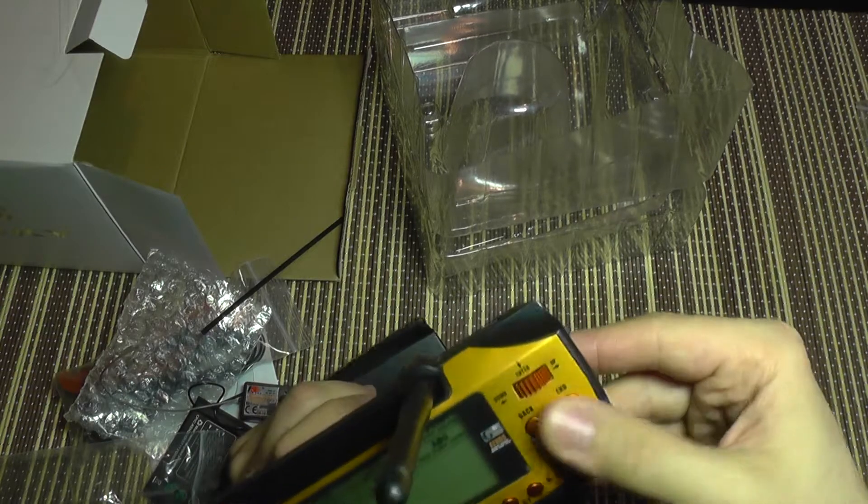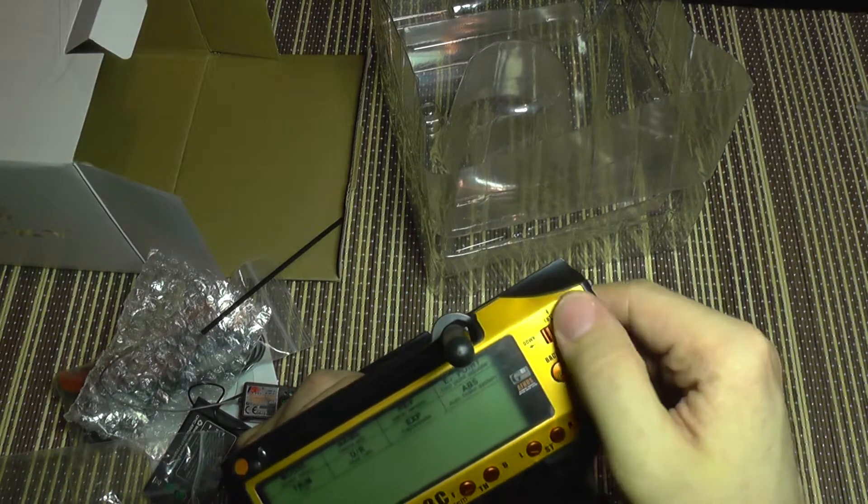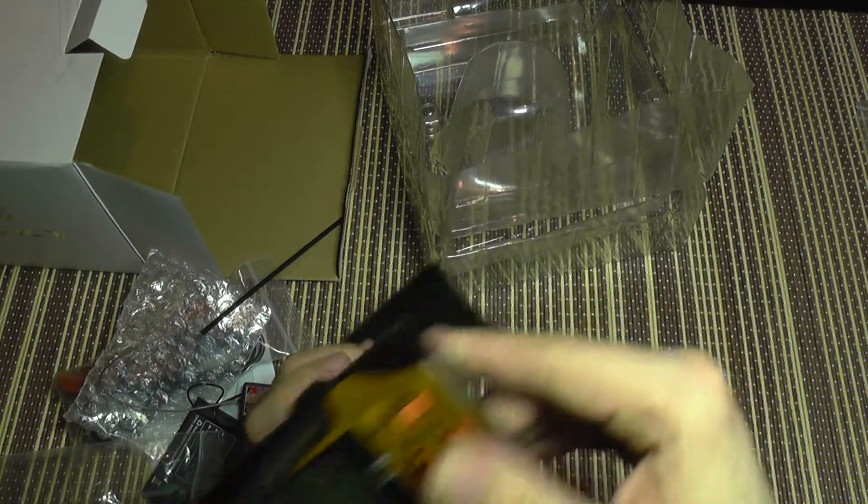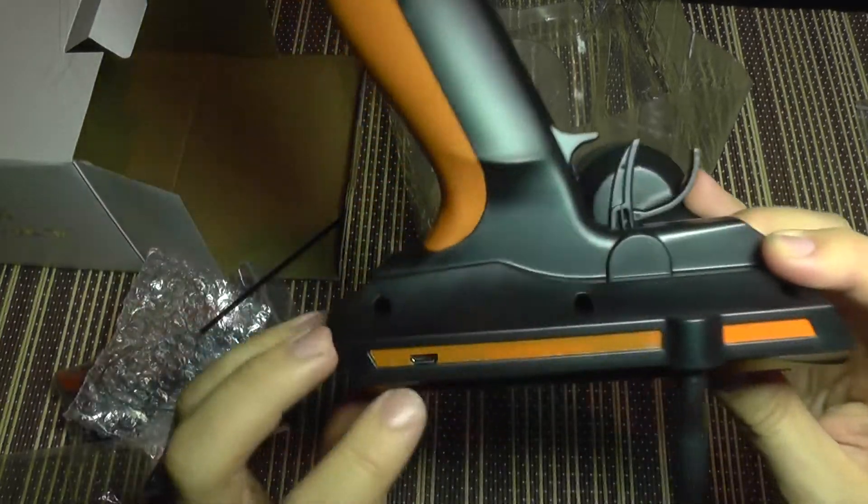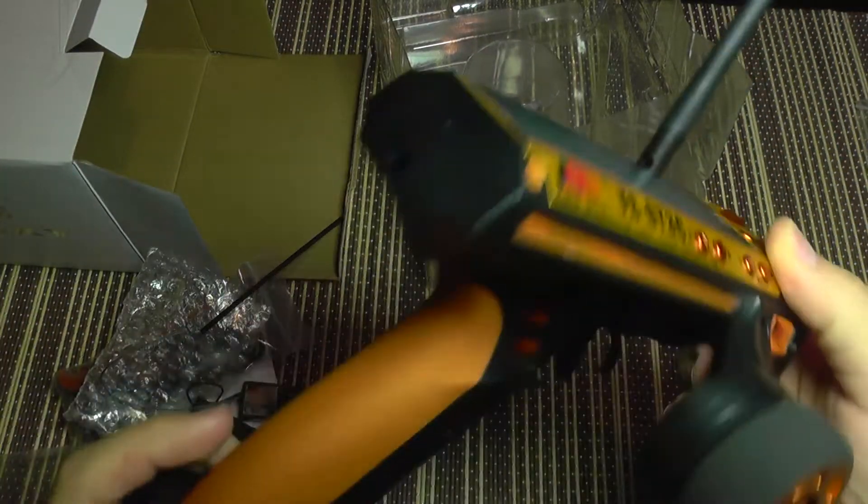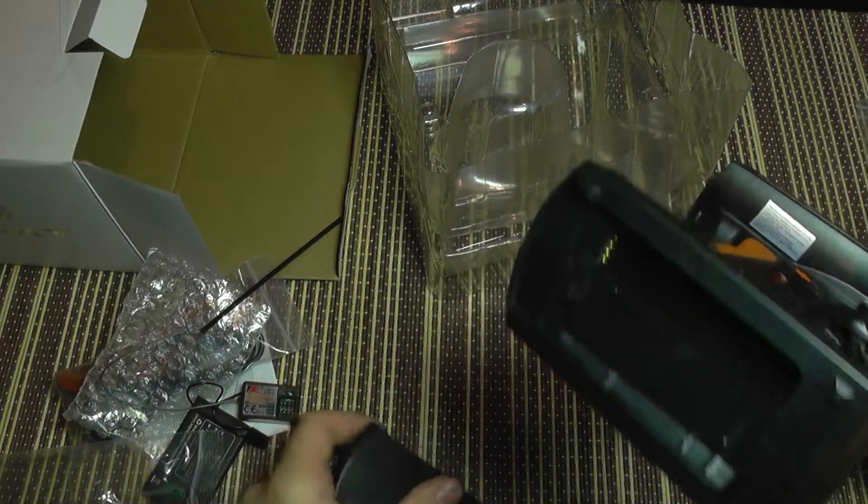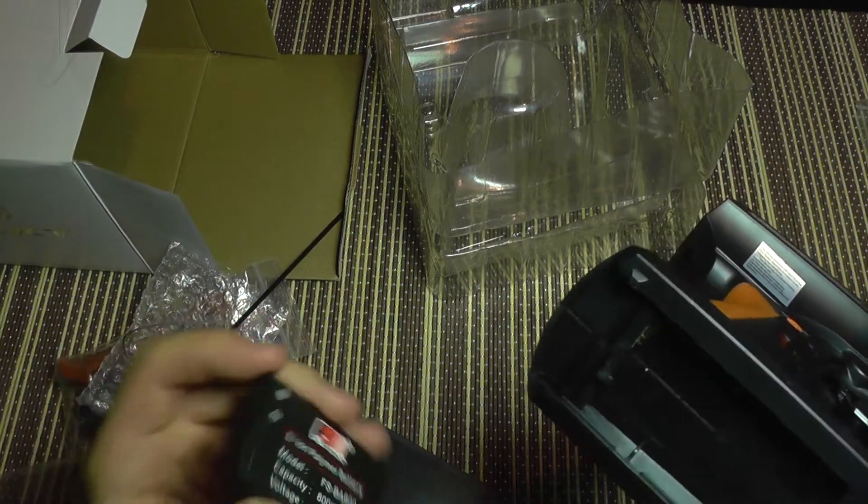And of course it has trims for throttle, steering and lots of other buttons here, slider and it's also a push button, a micro USB port and that's about it. So let's install the battery, let's see if it powers on.